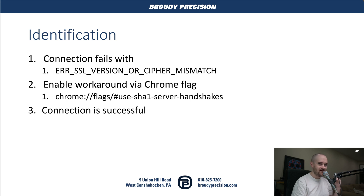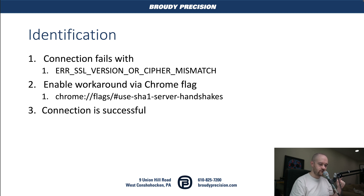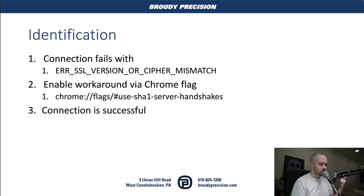So how do we identify that this is actually the problem? First, you need to get this error message from within the browser. Second, you're going to use this workaround flag in Chrome — it's a back-end feature that's hidden away a bit that turns off this change the developers made. We're going to turn that on, then try to connect again to our supervisor. If we connect successfully, we know this was the issue. Let's jump into Chrome and see this in action.